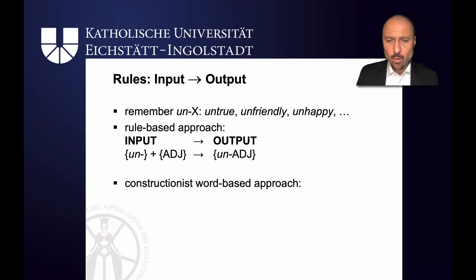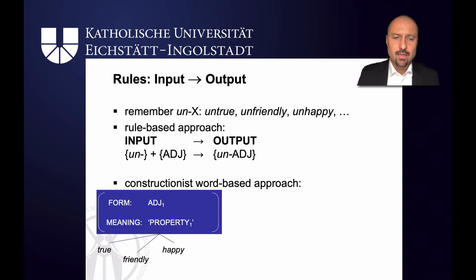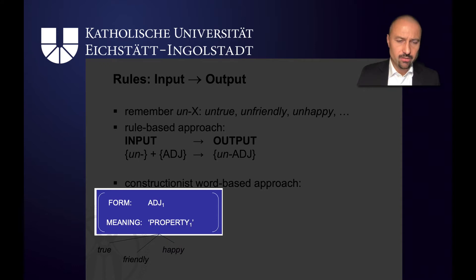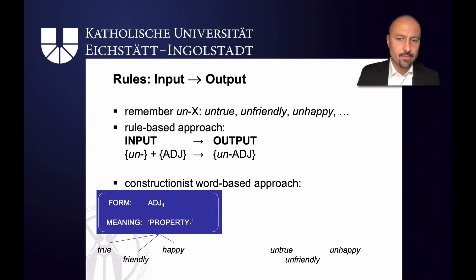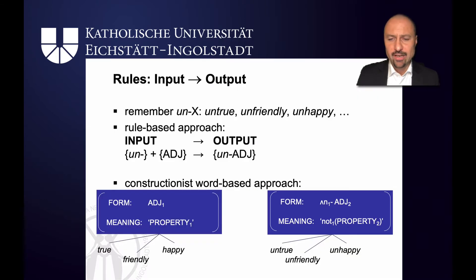From a constructionist word-based approach, this looks slightly different. The idea is that in your input you come across adjectives like true, friendly, and happy, and these allow you to generalize to a schema — a simple schematic construction with adjective on the formal level and the meaning being 'property.' On the other hand, if you come across words like untrue, unfriendly, unhappy, you will generalize to an un-adjective construction which has the meaning of 'not property' — so not true, not friendly, not happy.